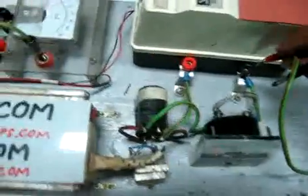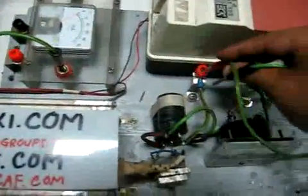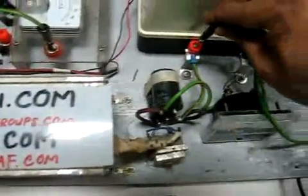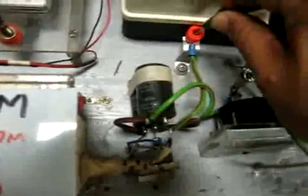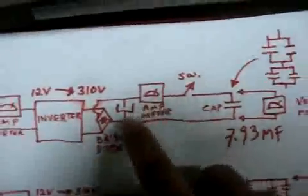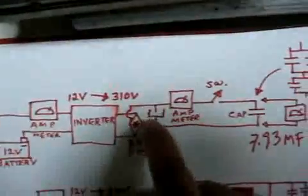This capacitor will be connected here, negative from power. Based on our circuit, this is the 7.93 microfarad capacitor, and this is the ammeter. The ammeter is here, and the switching is done by removing and plugging in — that's the simple way. This ammeter, this capacitor, this bridge, and here is the output of the inverter.